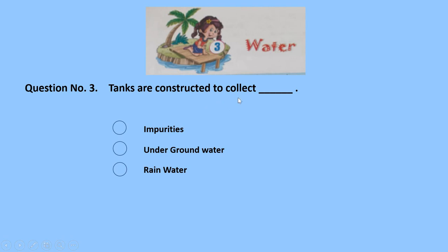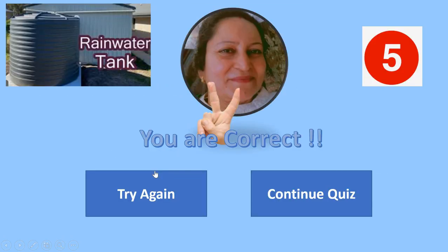Question 3: tanks are constructed to collect dash. What does it collect — impurities, underground water, or rainwater? Impurities — wrong. Rainwater — correct! 5 marks for this answer. In the picture you can see this is a rainwater tank; this tank is used to collect rainwater.